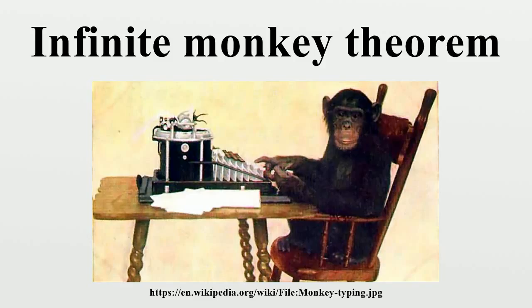If there were as many monkeys as there are atoms in the observable universe typing extremely fast for trillions of times the life of the universe, the probability of the monkeys replicating even a single page of Shakespeare is unfathomably minute, ignoring punctuation, spacing, and capitalization. A monkey typing letters uniformly at random has a chance of 1 in 26 of correctly typing the first letter of Hamlet. It has a chance of 1 in 676 of typing the first two letters. Because the probability shrinks exponentially, at 20 letters it already has only a chance of 1 in 26^20.